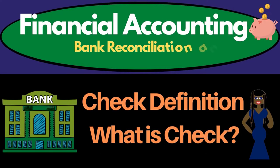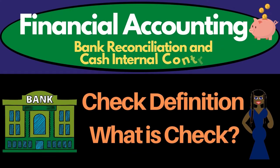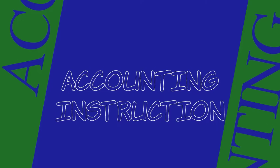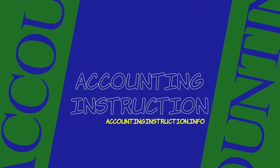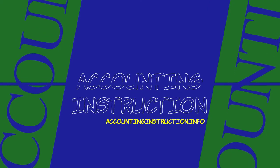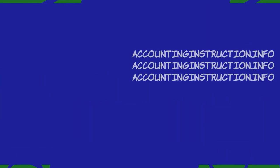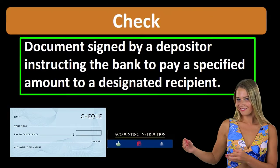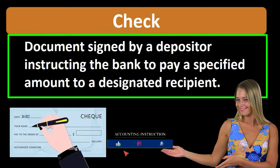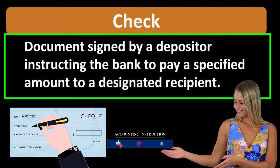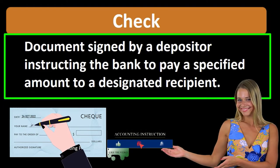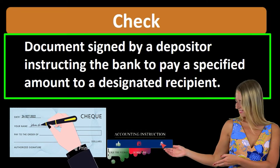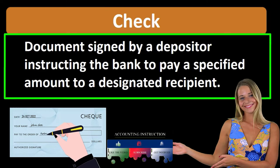Hello, in this lecture we will define check according to fundamental accounting principles, 22nd edition. The definition of a check is a document signed by a depositor instructing the bank to pay a specific amount to a designated recipient.